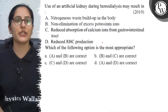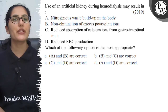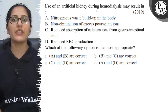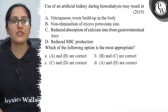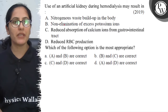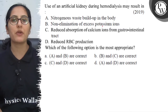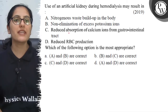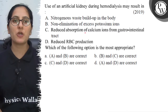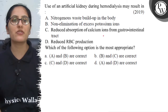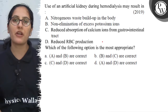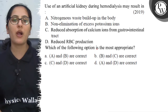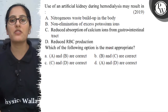Let's see the question. Use of an artificial kidney during hemodialysis may result in: Option A, nitrogenous waste build up in the body; Option B, non-elimination of excess potassium ions; Option C, reduced absorption of calcium ions from the gastrointestinal tract; and Option D, reduced RBC production. Which of the following option is the most appropriate?